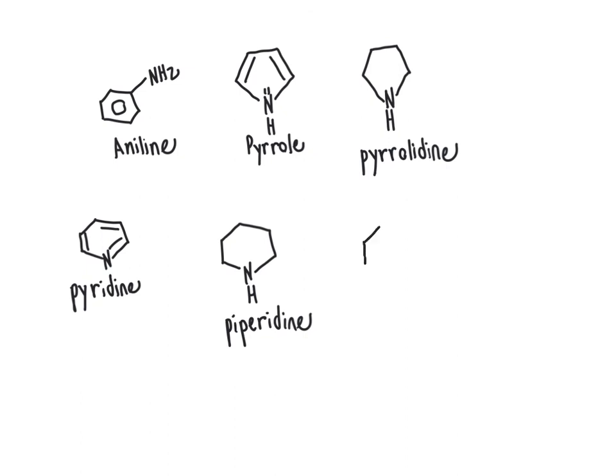Pyrimidine is a six-membered ring that has two nitrogen atoms present, and those two nitrogen atoms are at these two positions, like so.